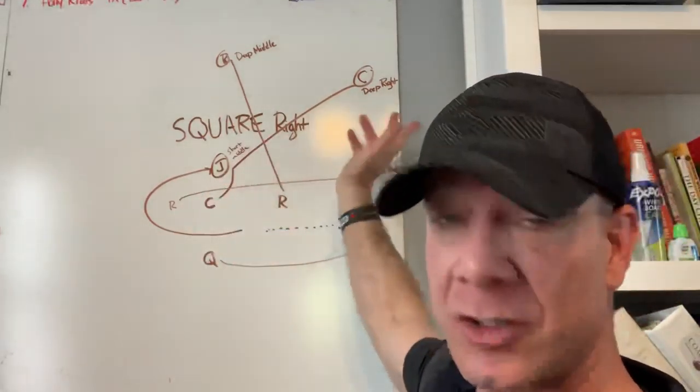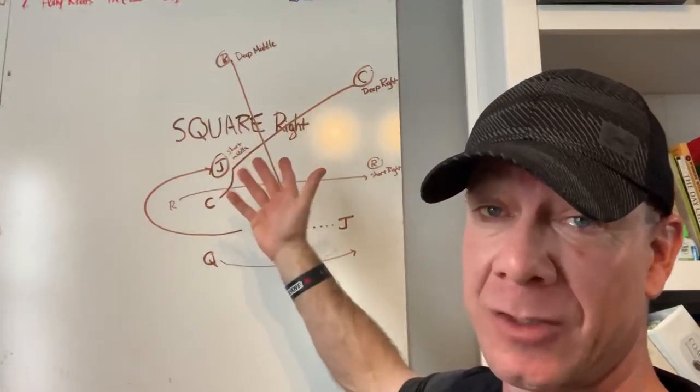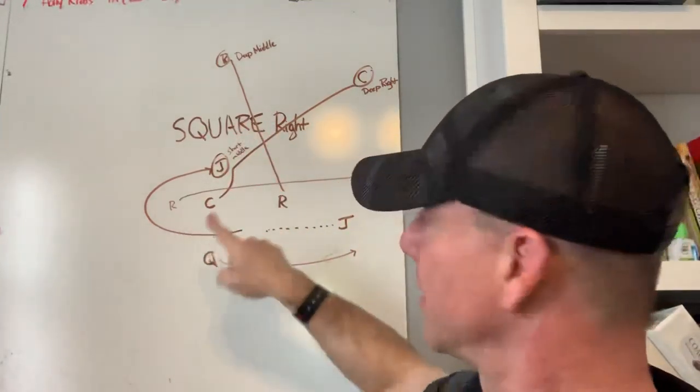So again, receivers got to run to their spot. Quarterback's job is to avoid and find the open guy. So a couple of keys here.